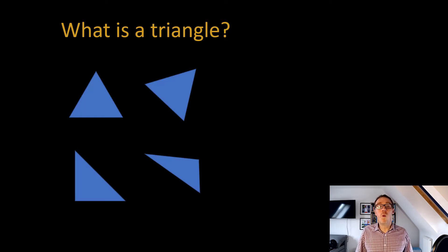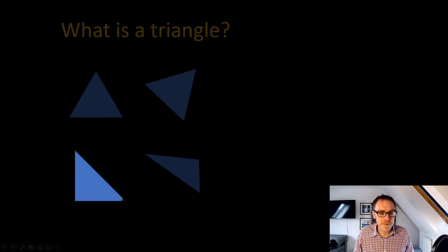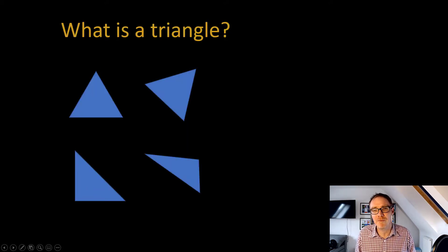So after a while I realized that wasn't so great. So then I started trying to widen my students appreciation and experience of, in this case, the concept of a triangle with multiple examples. So this is a bit better because now we've got an orientation change, we've got a different type of triangle, a right angle triangle and so on. But of course this is still severely lacking.